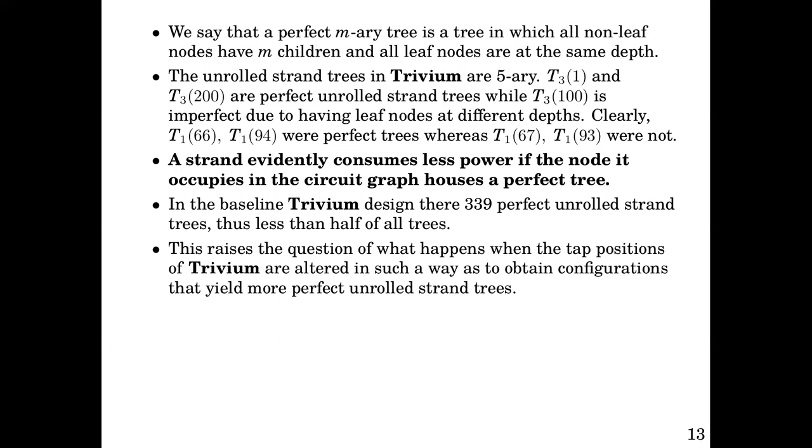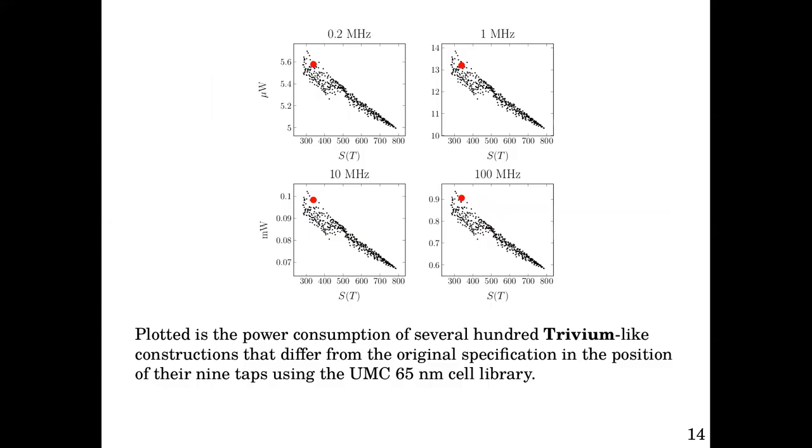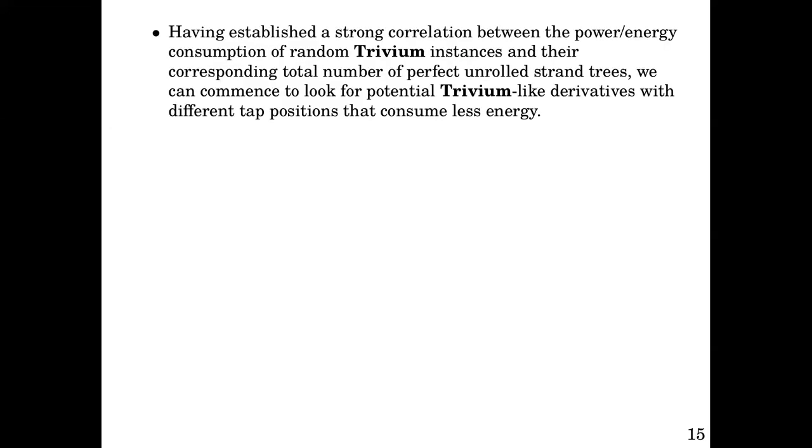This raises the question of what happens when the tab positions of trivium are altered in such a way as to obtain configurations that yield more perfect unrolled strand trees. Plotted is the power consumption of several hundred trivium-like constructions that differ from the original specification in the position of their nine tabs using the UMC 65 nanometer cell library. The tendency of higher number of perfect unrolled strand trees with respect to the power consumption is clearly demarcated. Having established a strong correlation between the power/energy consumption of random trivium instances and their corresponding total number of perfect unrolled strand trees, we can commence to look for potential trivium-like derivatives with different tab positions that consume less energy.